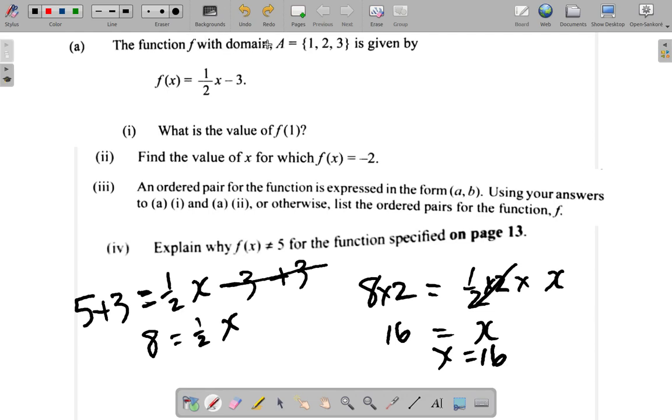Now, up here it says the domain. That means the values of x that you put in must be 1, 2, or 3. Only. And this is saying x is 16. So that's why.